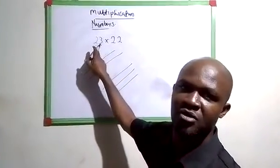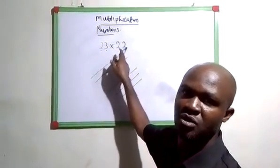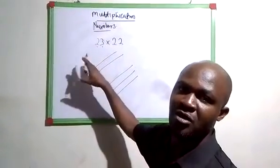Now after doing this, because you're multiplying 23 with 22, the next set of lines you're going to draw should run across these ones you have on the board already.